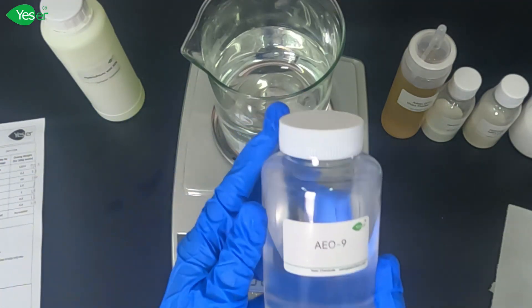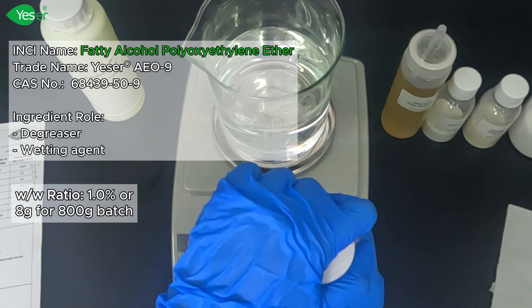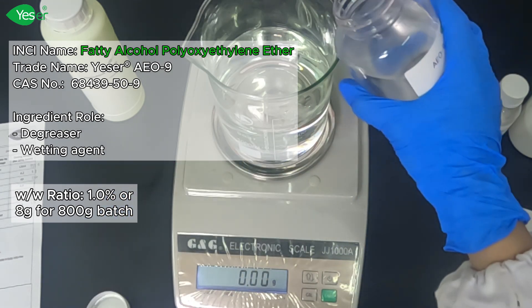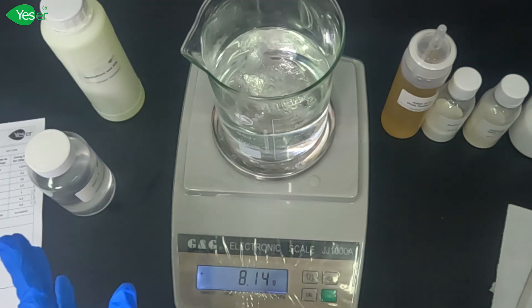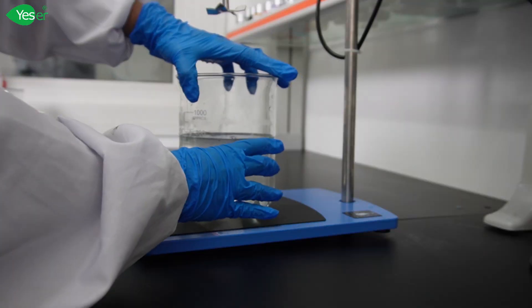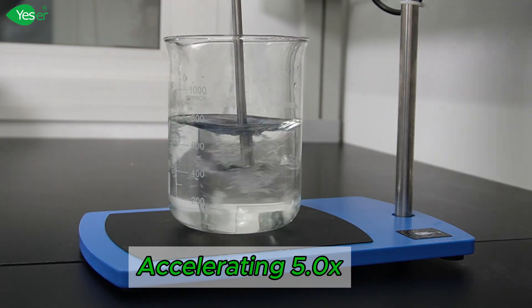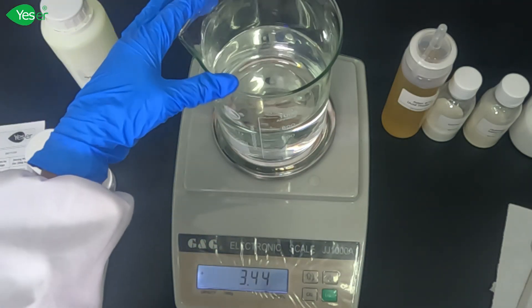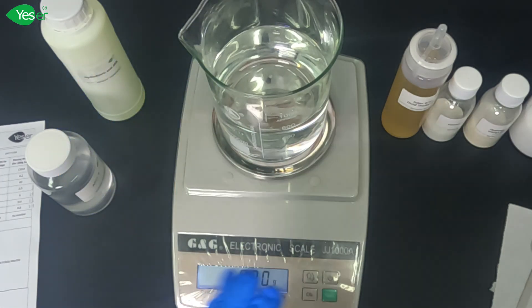Then we will add our surfactant, which is Ae09. Weigh 8 grams of this or 1% for our formula. Now let's stir this in our overhead mixer until it is fully dissolved. Now that we have fully dissolved our Ae09, we will now divide this batch into 4 and then add our thickeners.